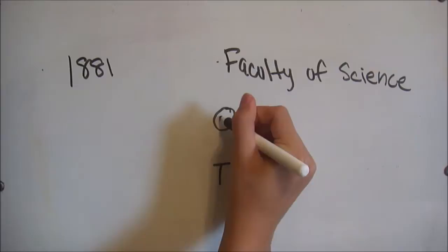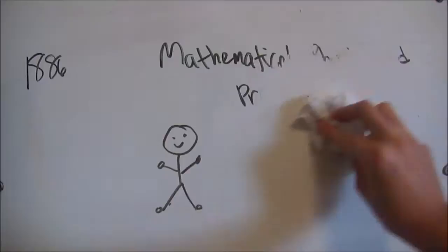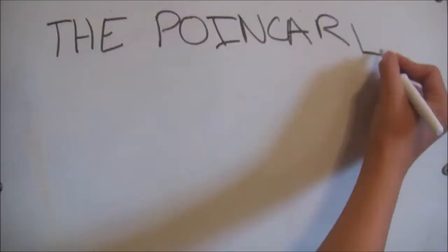After two years of teaching, Poincaré was appointed to a chair in the prestigious Faculty of Science in Paris in 1881. In 1886, Poincaré was nominated for the chair of Mathematical Physics and Probability at the Sorbonne. He held onto these positions until his death at the age of 58 in July 1912.